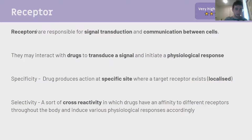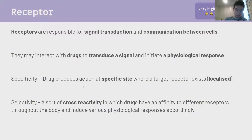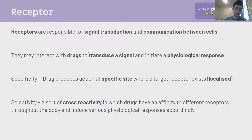What is a receptor? Receptors are responsible for signal transduction and communication between cells. They may interact with drugs to induce a signal and initiate a physiological response. Drugs can be specific or selective. A specific drug produces action at a specific site where its target receptor exists - usually localized, preventing systemic effects. Selectivity is a cross-reactivity in which drugs have affinity for a variety of different receptors throughout the body, inducing various physiological responses. Specific means one spot, not many systemic effects. Selective means you could have receptors in your gut, by your lungs, and giving the drug influences all those systems.